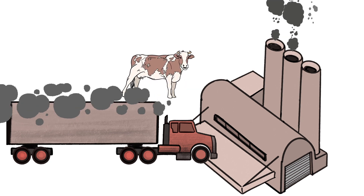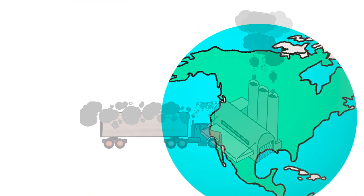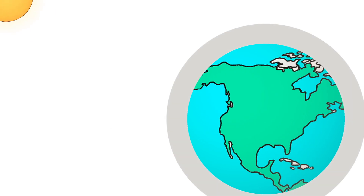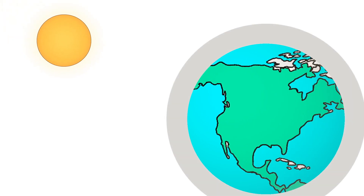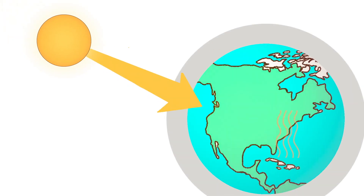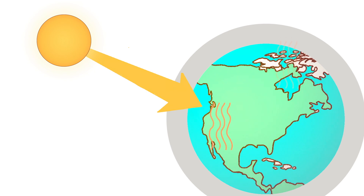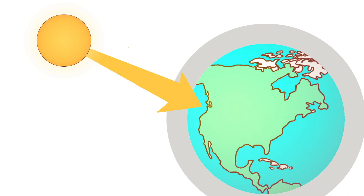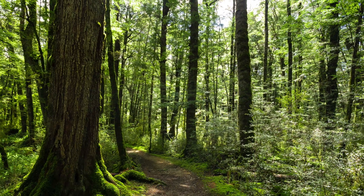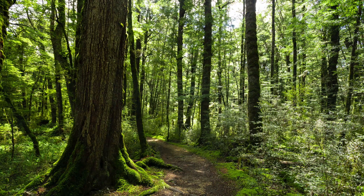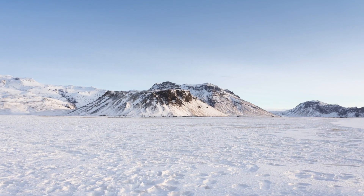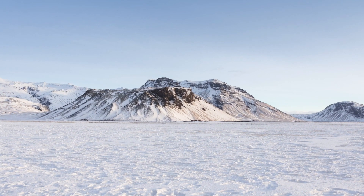Greenhouse gases are chemical compounds that act like a blanket around the Earth, trapping heat that radiates from our planet. This heat is created by energy from the sun. Greenhouse gases are critical to human survival — without them, Earth would be too cold for humans to live.